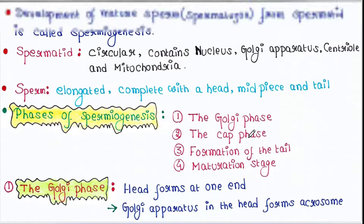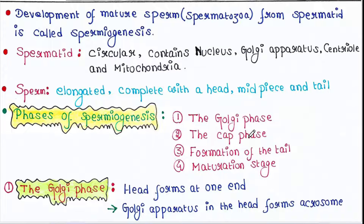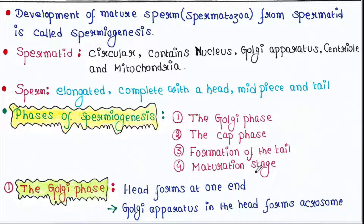So we will see the different phases of spermiogenesis. There are four main phases: first, the Golgi phase, then the cap phase, then formation of the tail, and last the maturation stage.